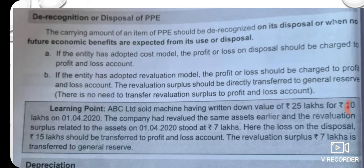The second module is De-recognition or Disposal of PPE. The carrying amount of an item of PPE should be de-recognized on its disposal or when no future economic benefits are expected from its use or disposal.